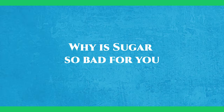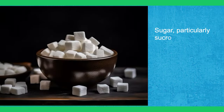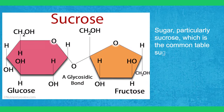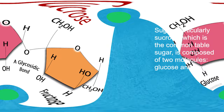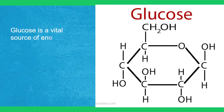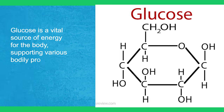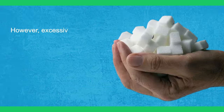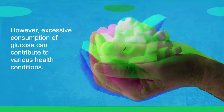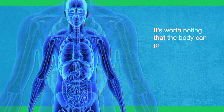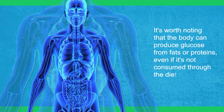Why is sugar so bad for you? Sugar, particularly sucrose — the common table sugar — is composed of two molecules: glucose and fructose. Glucose is a vital source of energy for the body, supporting various bodily processes. However, excessive consumption of glucose can contribute to various health conditions. It's worth noting that the body can produce glucose from fats or proteins even if it's not consumed through the diet.